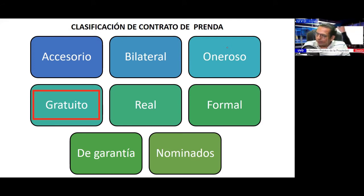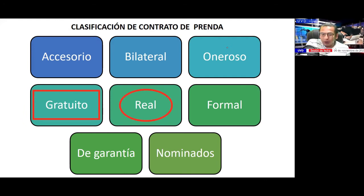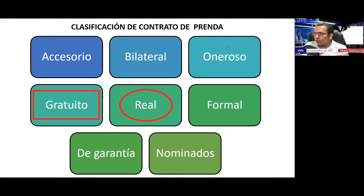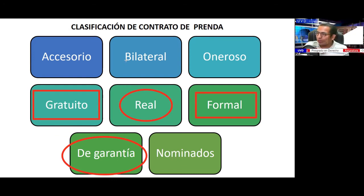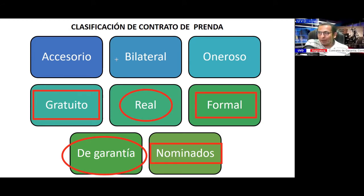The prenda is real because the thing must be delivered to the creditor, who is obligated to return it upon fulfillment. It is formal because the requirements established by law must be met. It is a guarantee contract because it is subordinated to the fulfillment of a principal obligation. It is nominado because its classification is properly structured within the civil norm.